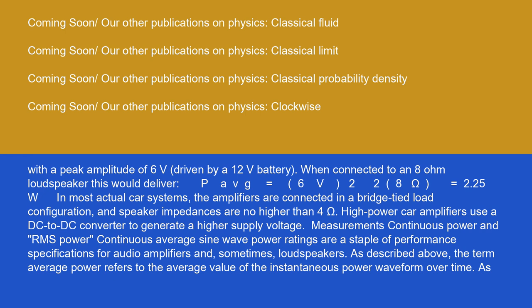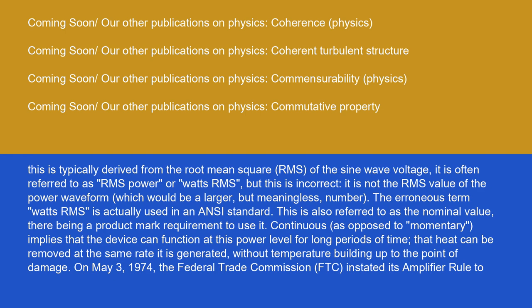Measurements: Continuous power and RMS power. Continuous average sine wave power ratings are a staple of performance specifications for audio amplifiers and, sometimes, loudspeakers. As described above, the term average power refers to the average value of the instantaneous power waveform over time. As this is typically derived from the root-mean-square (RMS) of the sine wave voltage, it is often referred to as RMS power or Watts-RMS.